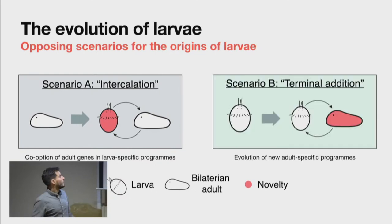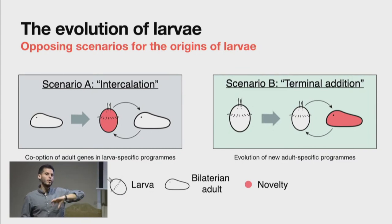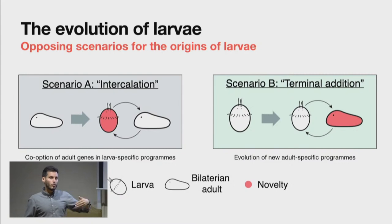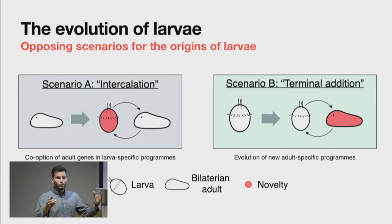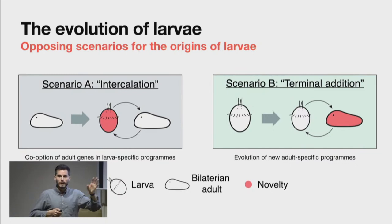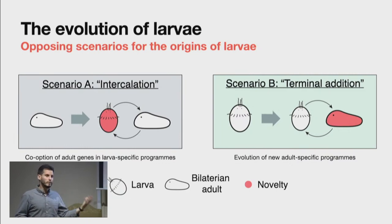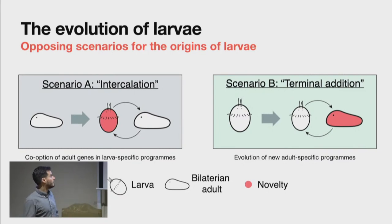The terminal addition scenario posits that all different adult forms we see today evolved independently, by adding new developmental programs independently in different animal phyla. These are the two main theories and there is no consensus — we really don't understand how larvae evolved. That's basically the question we addressed: how did larvae evolve, and can we shed new light on this?